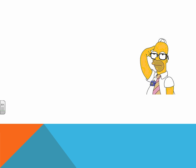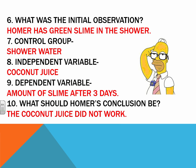Next, let's move on to Homer — question number six. What is the initial observation? Homer has green slime in the shower. The control group would be the shower water. The independent variable would be the coconut juice. The dependent variable would be the amount of slime after three days. What should Homer's conclusion be? The coconut juice did not work.